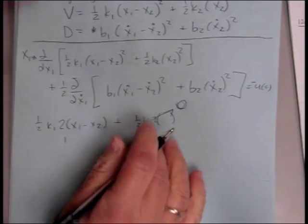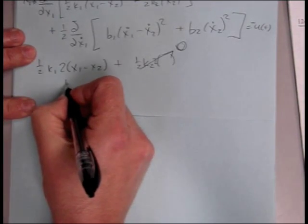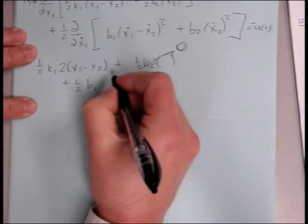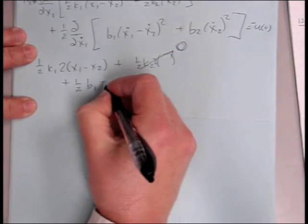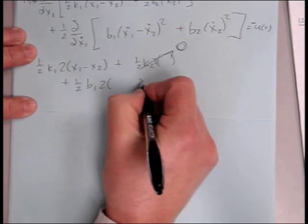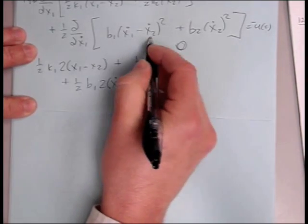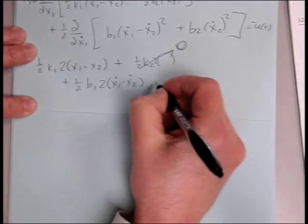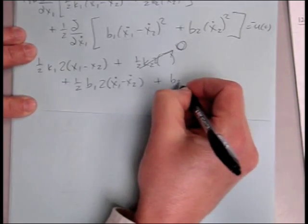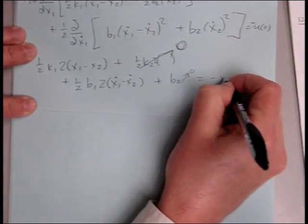Same thing with the second part, plus one-half, partial with b1, partial of this term from the outside. The derivative of the outside is 2, and then x1 dot minus x2 dot, derivative of the inside, derivative of this with respect to x1 dot is just 1. And then the second one, b2, x2 dot derivative with respect to x1 dot is 0, equals negative u of t.